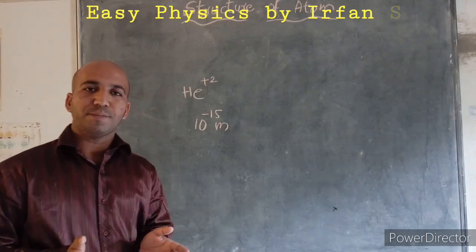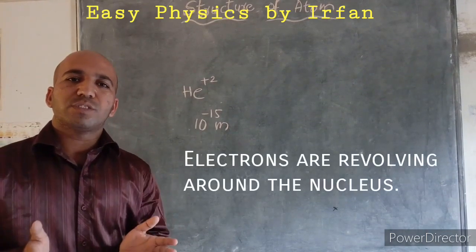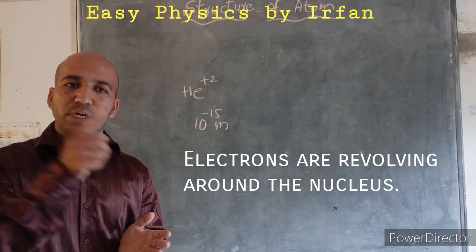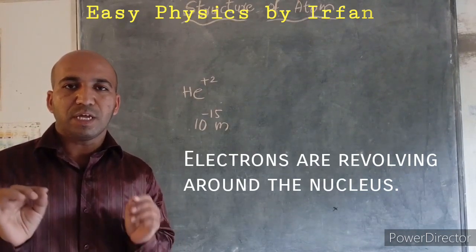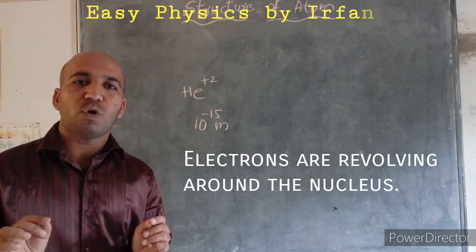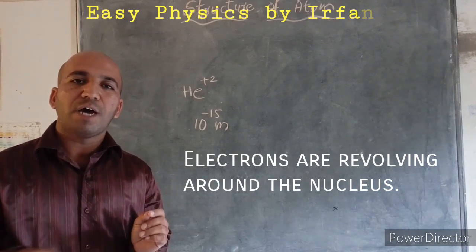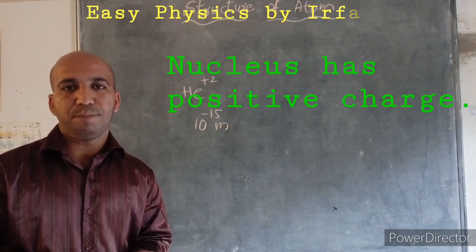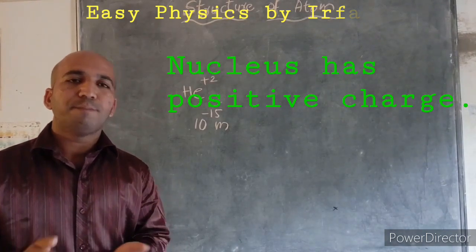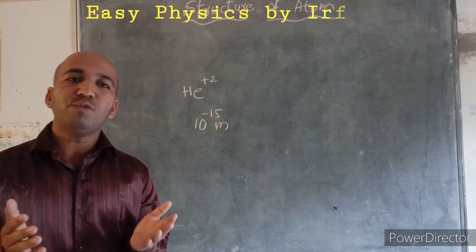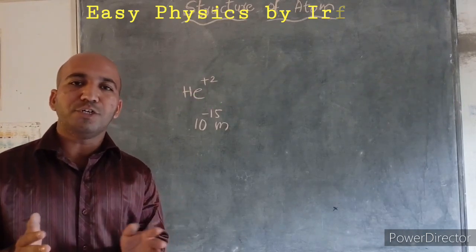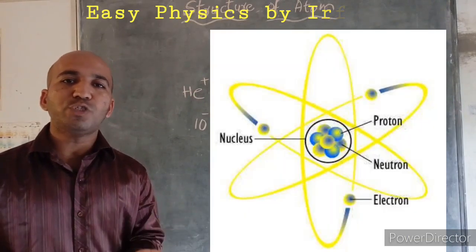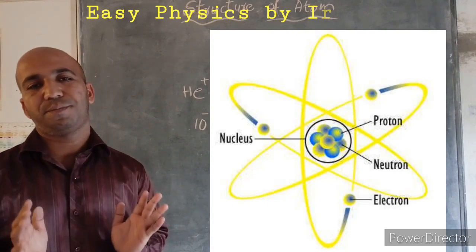According to Rutherford, the electrons are revolving around the nucleus. That means, the negatively charged electrons are revolving around the nucleus. And the nucleus has a positive charge. That means, in the nucleus, protons, the positively charged protons and neutral neutrons are present. So that's why these protons and neutrons are called as nucleons.